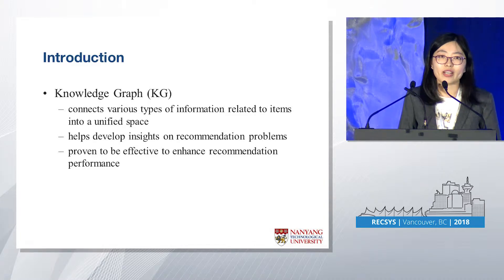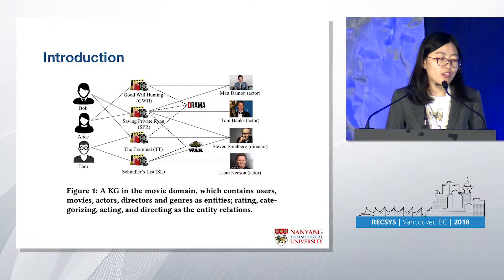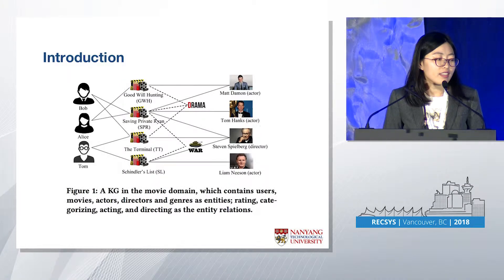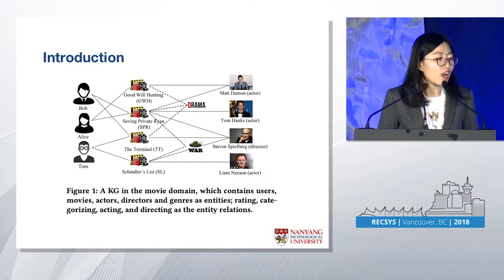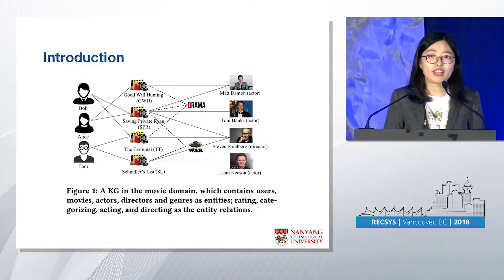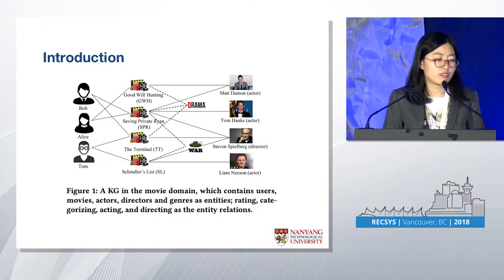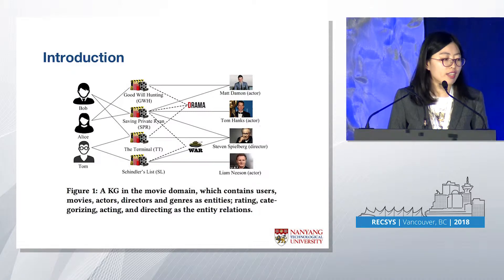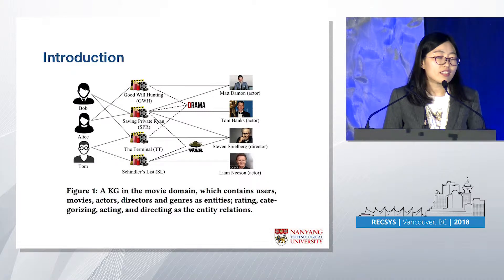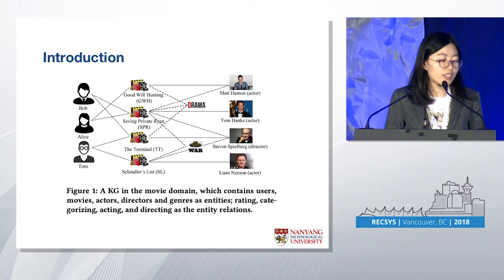Let's see a running example. Here is a knowledge graph in the movie domain. It contains users, movies, actors, and directors. Users can rate the movies, and movies can be characterized by different genres like drama or war. We also have the acting and directing relations. This knowledge graph is quite useful to infer the user's preference towards movies.